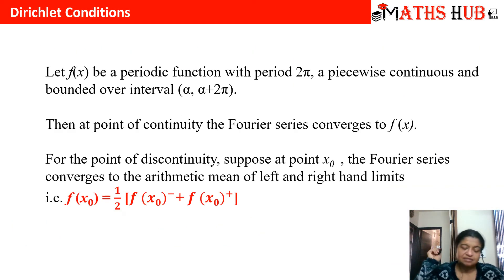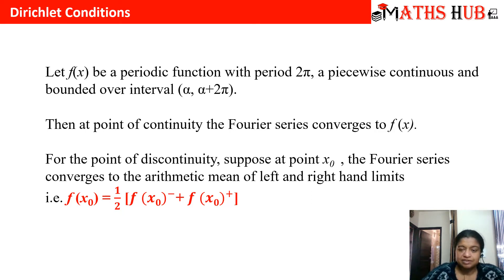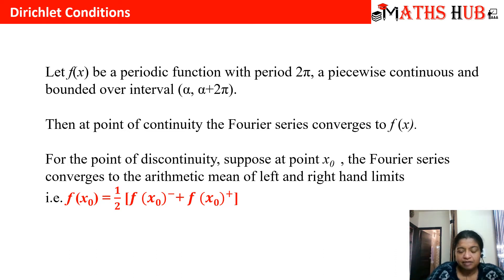Dirichlet's conditions state that if f(x) is a periodic function with period 2π, piecewise continuous and bounded over the interval alpha to alpha plus 2π, then at the point of continuity the Fourier series converges to f(x). So whenever we give some values to x we check the interval. If the value of x is in that interval and continuous, then we can directly substitute into the function.